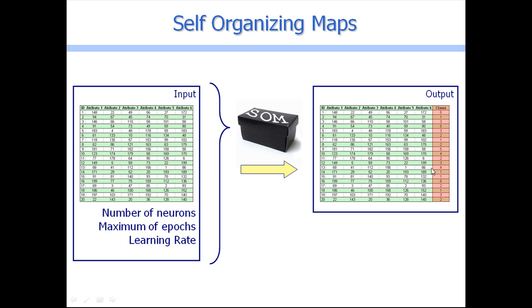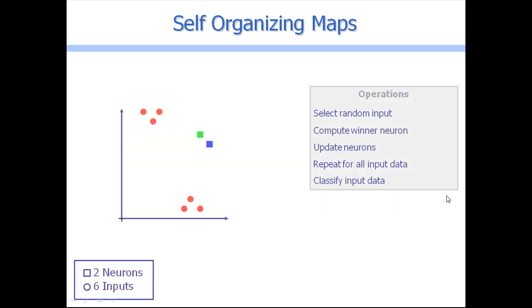As output we have one possible output as a single element. Here suppose we have only two features which are represented by these two axes where these circles mean inputs, so we have six inputs.